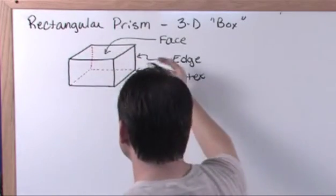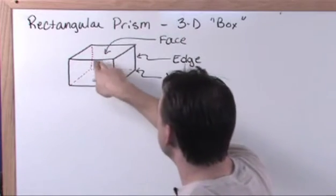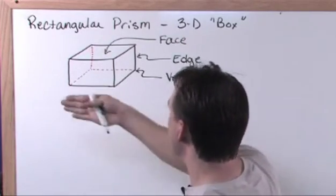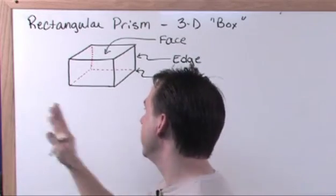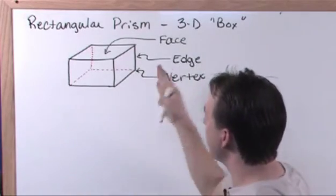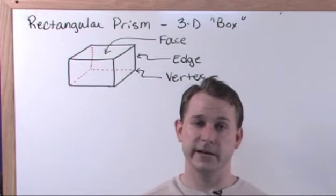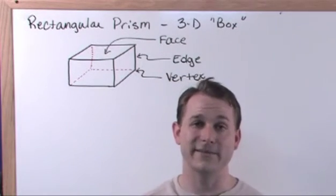Now, notice you have six faces on this shape here. One face here, two, three on the bottom, four in the back, five on this side, and six on this side. So if you count all the sides, you can just get a cube out in front of you and count them. You'll find that every cube or every rectangular prism is going to have six faces.